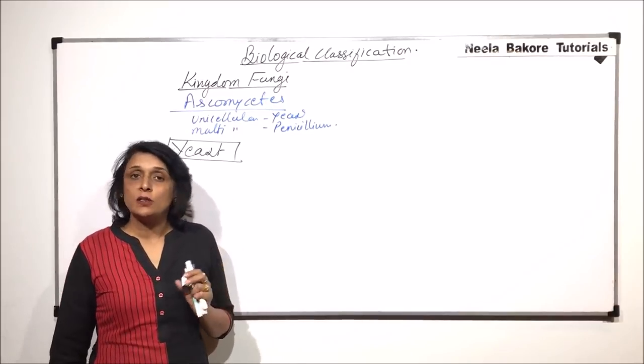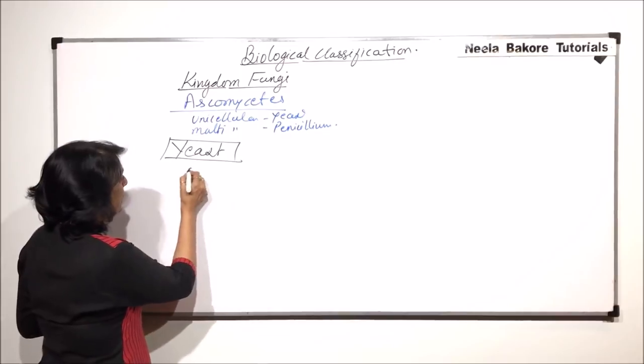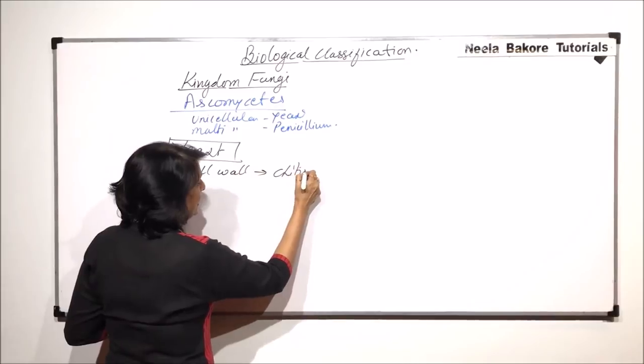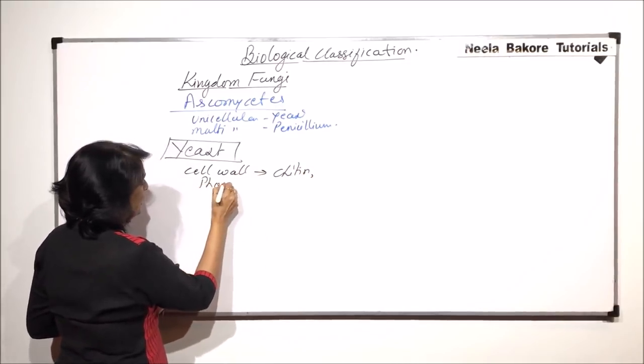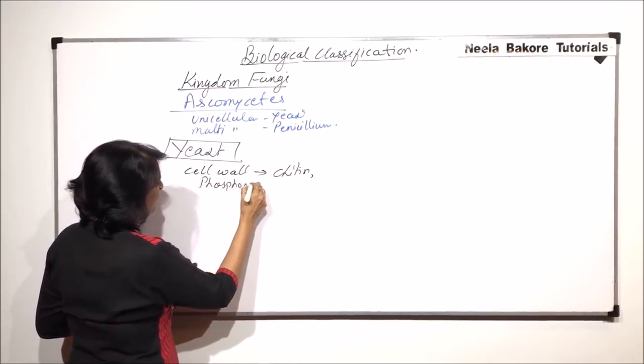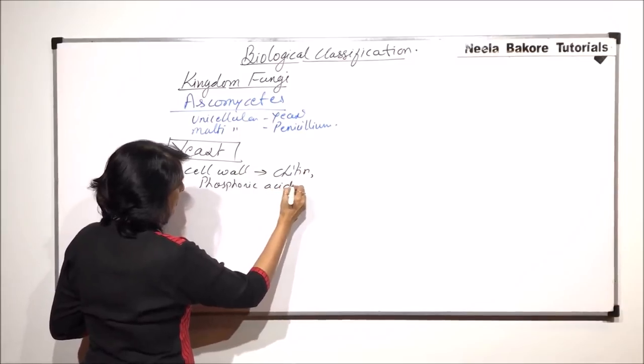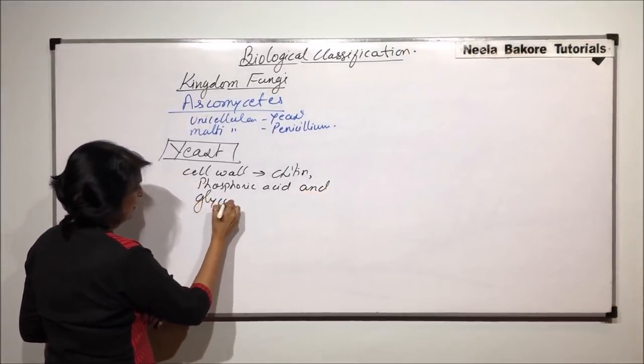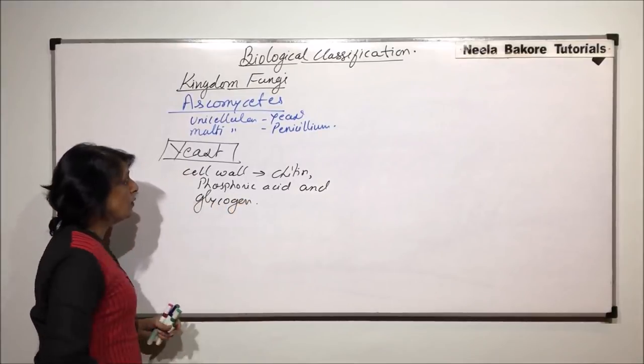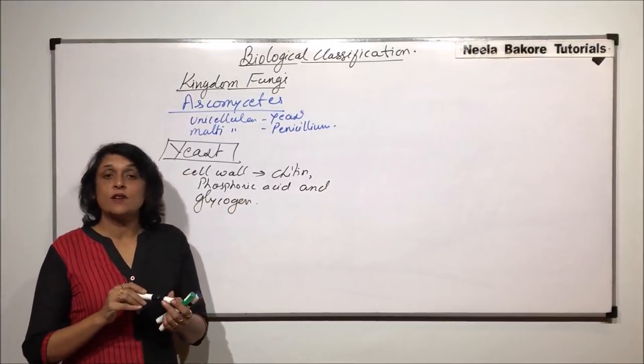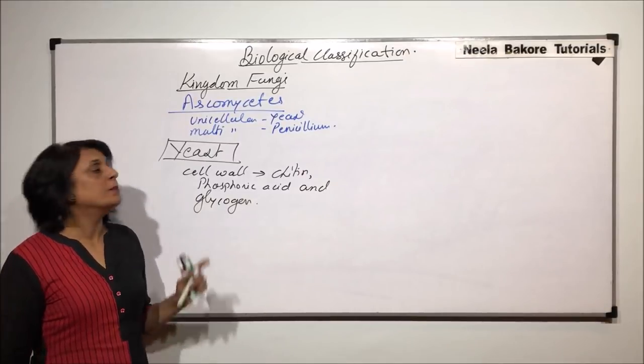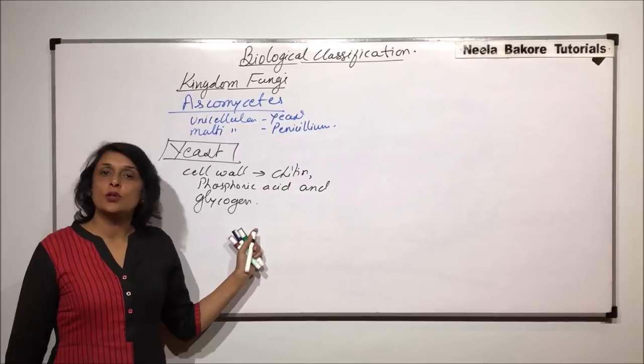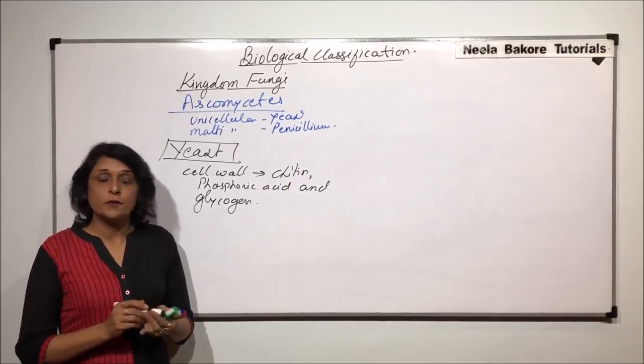There are certain special things. In case of yeast, the cell wall is made up of chitin, phosphoric acid and glycogen. So, we normally say that in case of fungi, the cell wall is made up of chitin. But in case of yeast, along with chitin, there are two more substances which is a different thing.